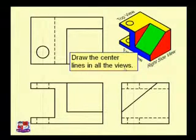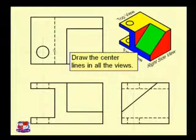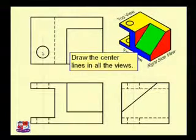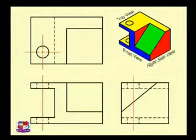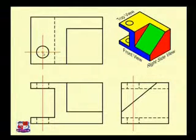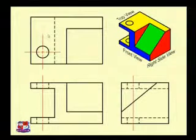Now draw the center lines in all views. This is the third type of line — center line. First we drew full lines, second we drew dotted lines, and now third we draw center lines. Whenever any radius or arc is present, we must show center lines. Here a circle is present, so center lines must be drawn from its axis. Whenever we draw a center line for a circle, a small plus sign should cross at the center — a dot or any other indication is wrong practice.